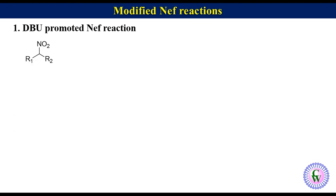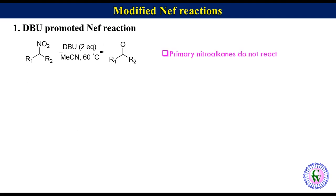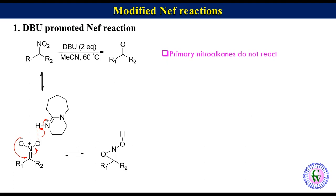The first modified condition is the DBU promoted NEF reaction. Secondary nitroalkanes are allowed to stir at 60°C in acetonitrile to produce a ketone; primary nitroalkanes don't react at all. Deprotonation of nitroalkane gives a DBU complex with nitronate ion, which is in equilibrium with N-hydroxyloxaziridine and hydroxynitrosoalkane. Loss of hyponitrous acid gives the ketone.